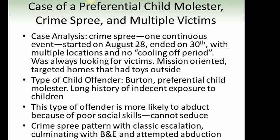Case of a preferential child molester — crime spree with multiple victims. Case analysis: the crime spree was one continuous event, starting August 28th and ending August 30th, involving multiple locations with no cooling-off period. The offender was always looking for victims, was mission-oriented, and targeted homes that had toys outside. The offender, Burton, was classified as a preferential child molester with a long history of exposure to children. This type of offender is more likely to abduct due to poor social skills and an inability to seduce. The crime spree showed classical escalation culminating in breaking and entering and attempted abduction.